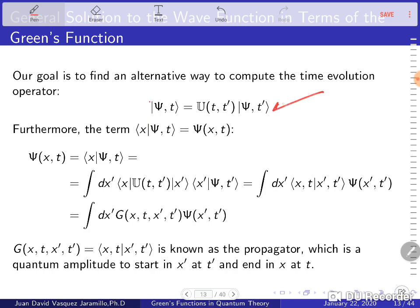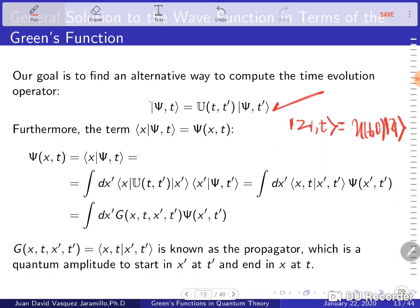Here we have the basic relation for time evolution in the ket space. This is the same as when you have an arbitrary state in the Hilbert space and you time-evolve it — at t equal to zero, you just time-evolve it between t and zero. First, you can start by acting on this ket with a bra that is an eigenstate of the position operator, and basically what you're doing is projecting this vector onto the x basis — and this becomes a wave function.